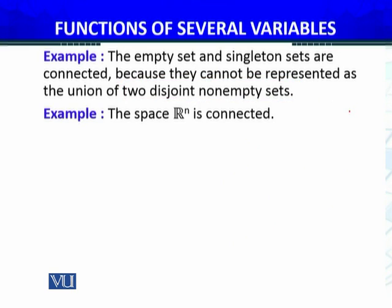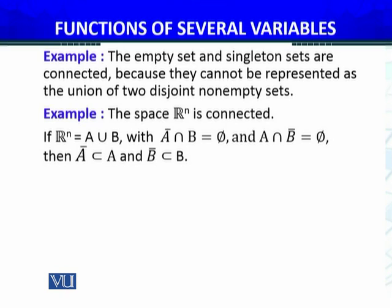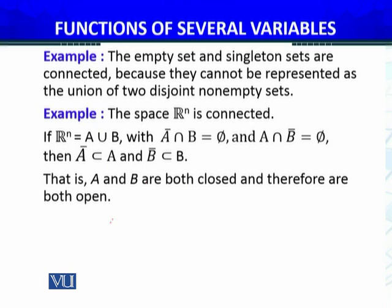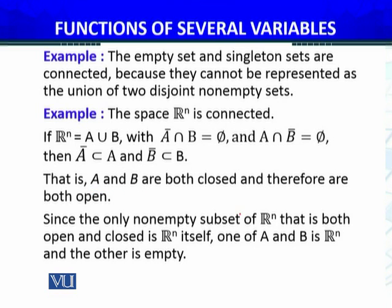This is a connected set by definition. The space RN is connected. Why? If RN equals A union B, with the closure of A intersected with B equal to empty, and A intersected with the closure of B equal to empty, then the closure of A is contained in A and the closure of B is contained in B. We can conclude that both A and B are open and closed sets. Since the only non-empty subset of RN that is both open and closed is RN itself, one of A and B must be RN and the other the empty set.